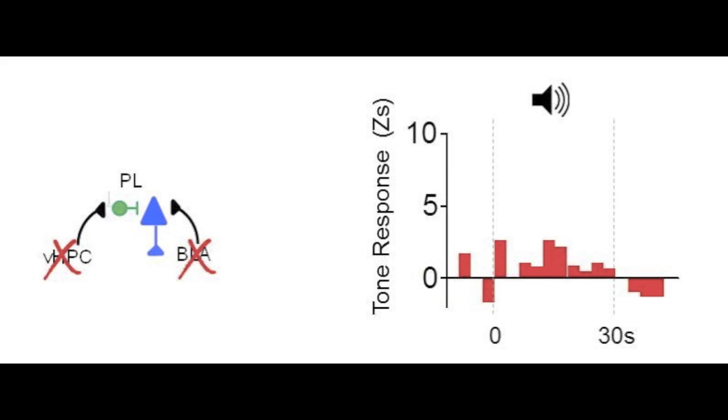And finally, when the BLA was inactivated, that tone response was again eliminated. This is important because it shows that this cell had a tone response that could not be revealed until the ventral hippocampus input was turned off.